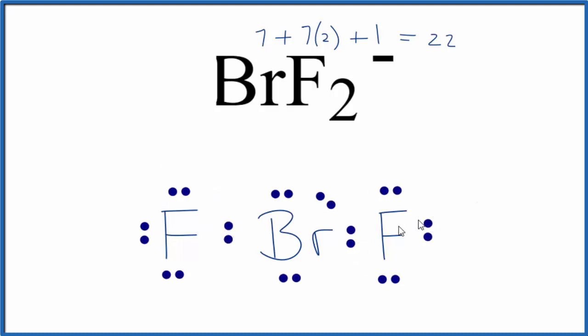The fluorine atoms are also okay. They have an octet. So this is a pretty good Lewis structure for BrF2-. Fluorine obeys the octet rule, so the only place we could put these two electrons here is on the bromine.